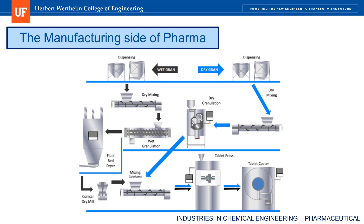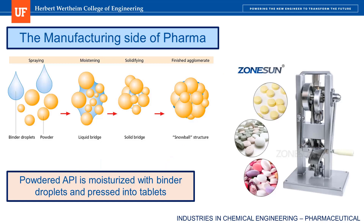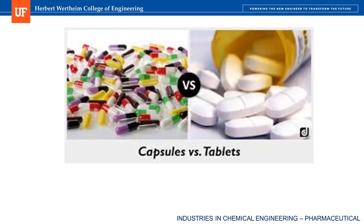Many chemical engineers choose to work in the manufacturing side of the pharmaceutical industry. Just like any other chemical process, it is best visualized by looking at a process flow diagram. The whole process involves the mass production of APIs and the subsequent loading into capsules or forming of tablets. For producing tablets, the API is produced in powder form and then pressed together after moisturizing them with binder droplets, kind of like how wet sand sticks together in a sandcastle. Speaking of capsules and tablets, these are some of the two most common forms of pills — can you think of advantages and disadvantages of both?